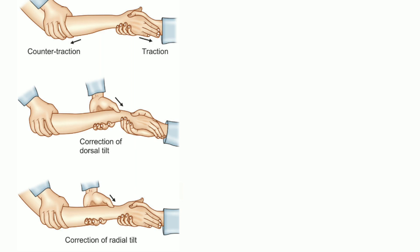Disimpaction is achieved by firm longitudinal traction to the hand against counter-traction by the assistant who grasps the arm above the flexed elbow. Some displacements are corrected by traction alone. The surgeon then presses the distal fragment into the palmar direction.